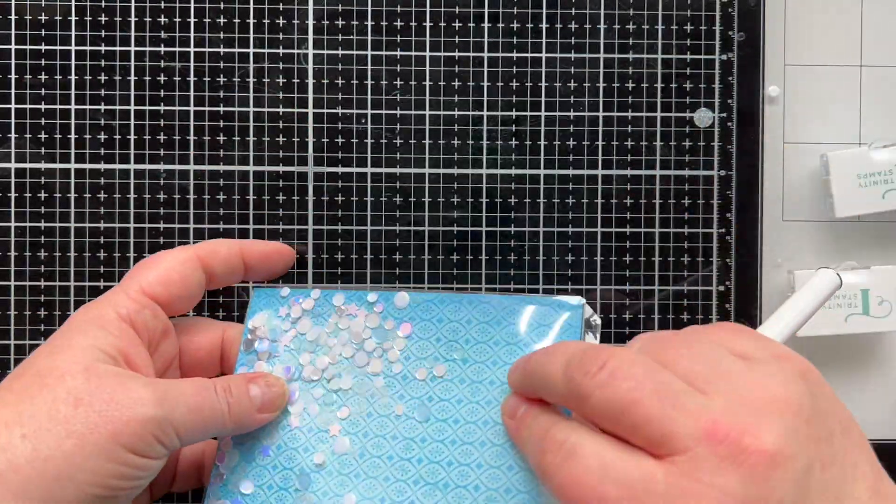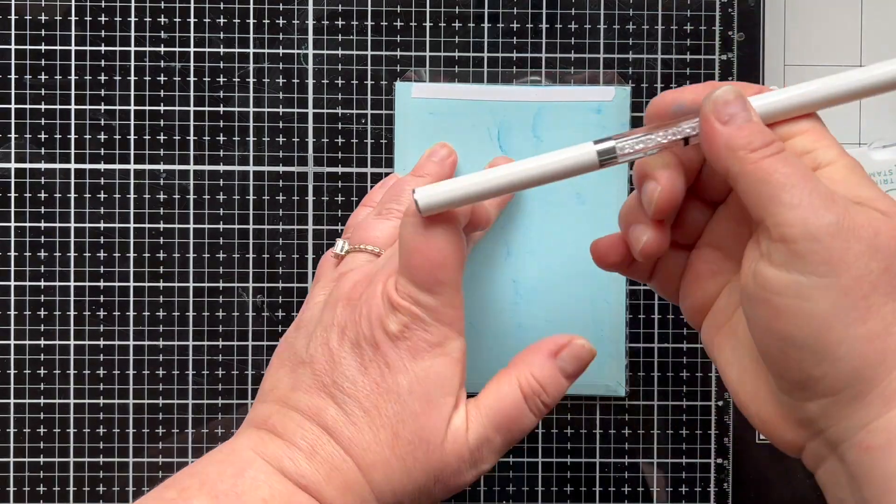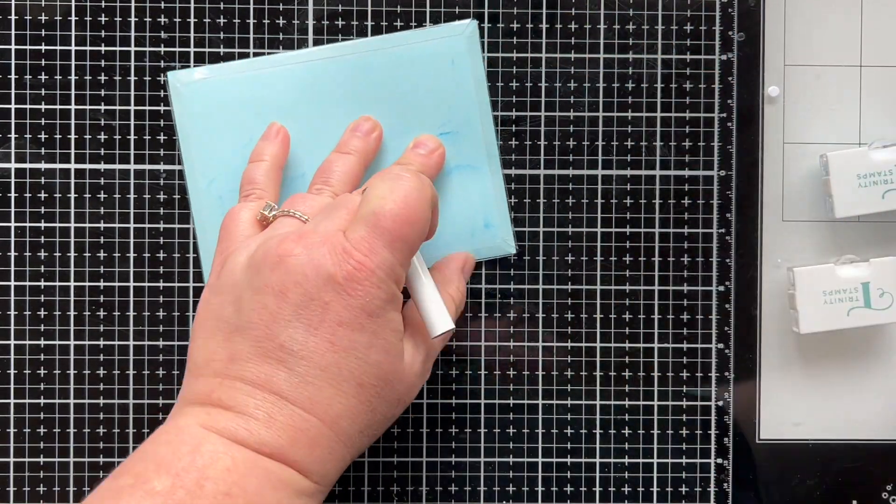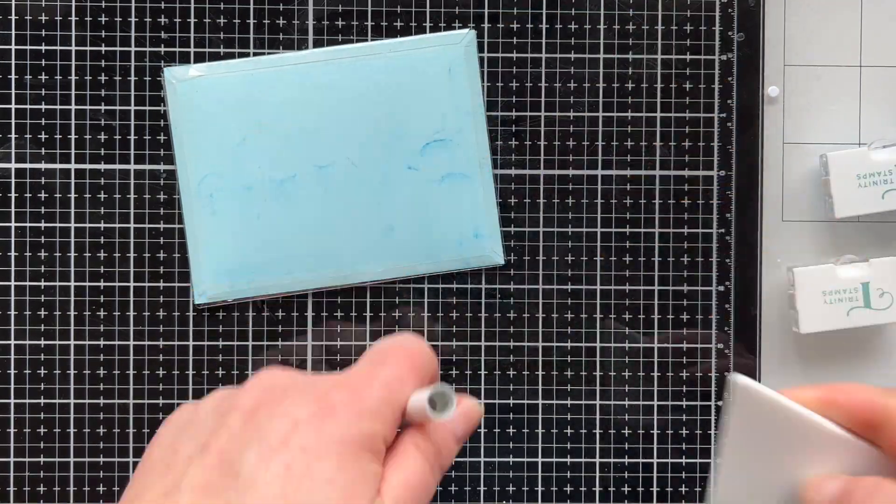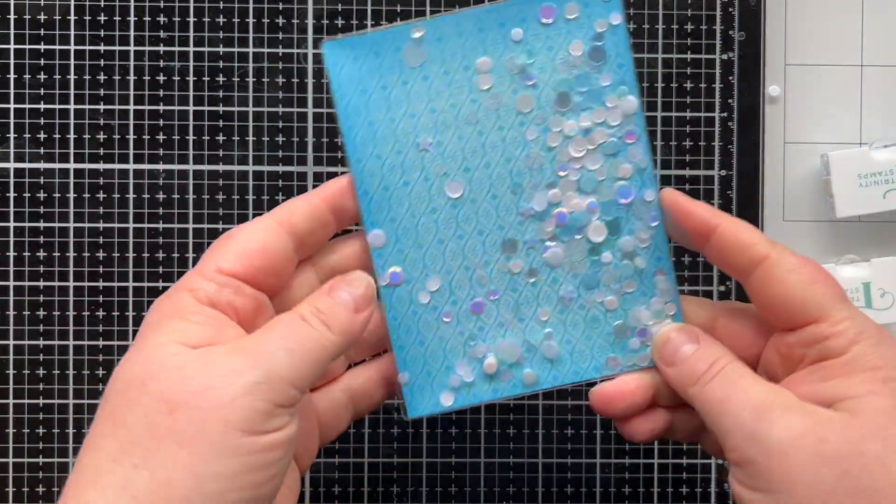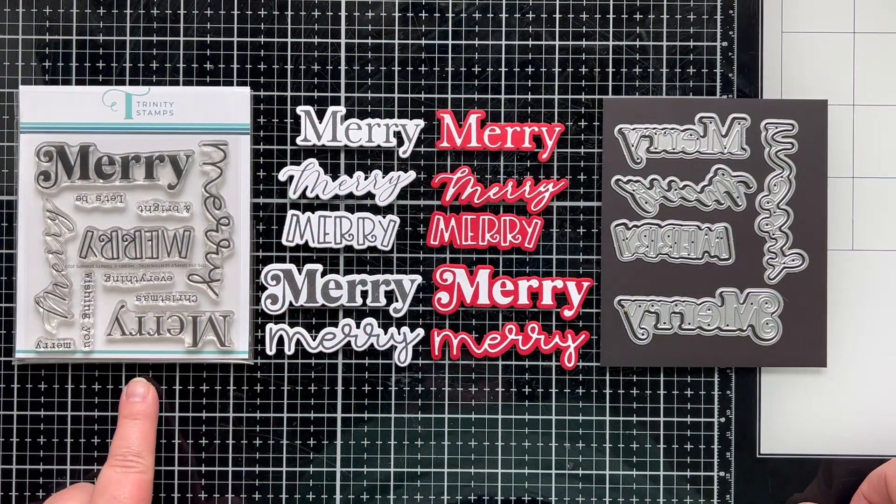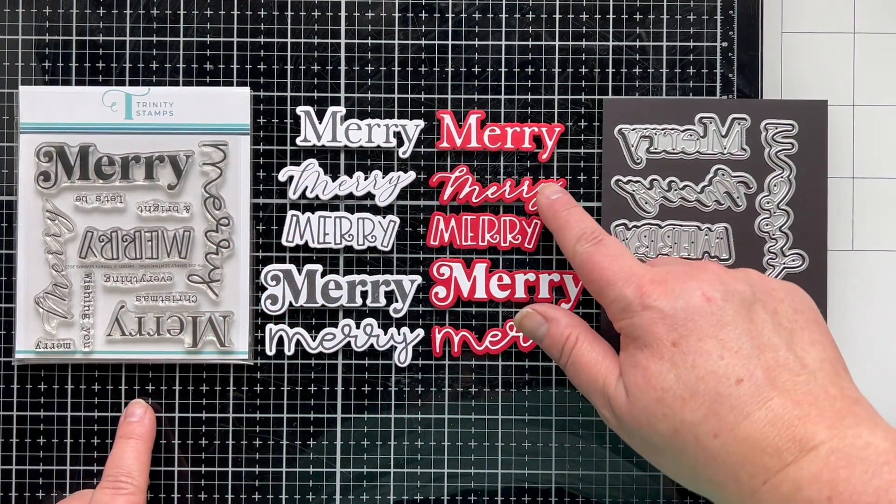When I do my shaker cards you might have seen me use the crease tool to pre-fold the edges. I find that so helpful and then I like to fold in the two edges that are opposite of each other first, then the bottom, pour my mixture in and fold down the top.